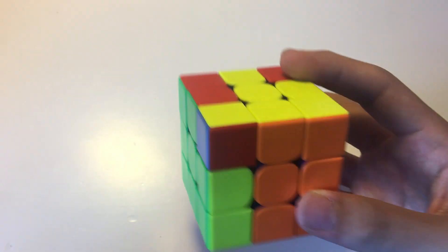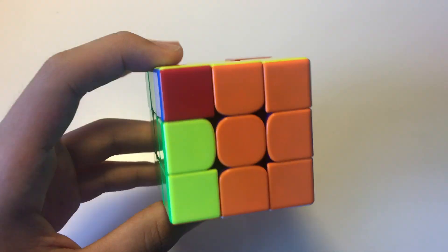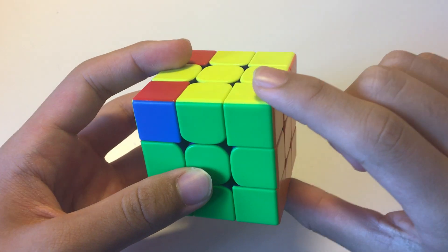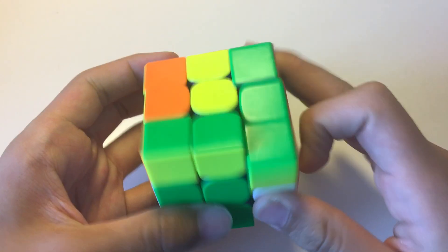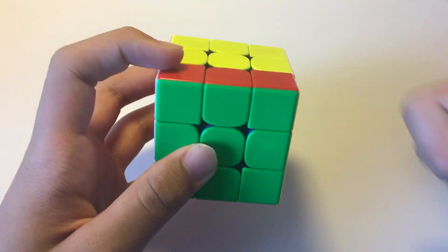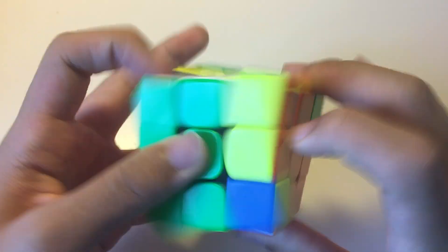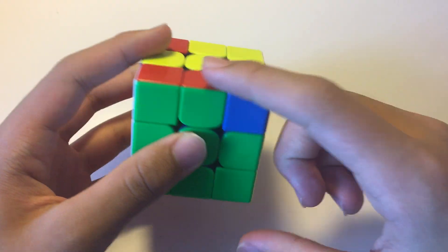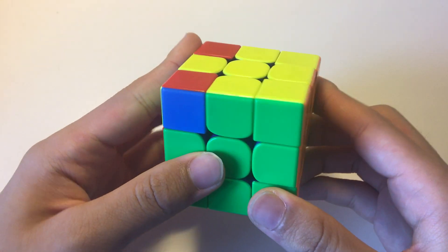But we're not really that good with lefty execution. So we can just do the righty one by doing F first, and then the Y perm from this angle. And then our setup was F, so we undo the F to become an F', and that solves the ZBLL case.